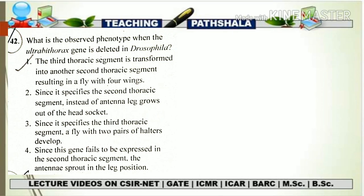In this way, you can say that there will be a duplication of the T2 segment. Whatever the phenotypic effect seen in T2 will repeat again in the T3 segment that has been transformed into a T2 segment. The phenotype of T2 was one pair of legs and one pair of wings. So this whole thing repeats in the transformed T3 segment — you are going to see one pair of wings and one pair of legs. There is a duplication of wings in the transformed T3 segment.